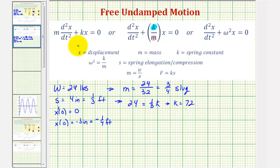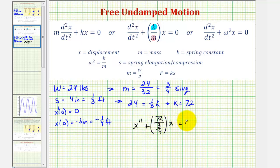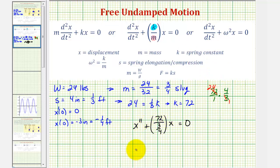Our differential equation is x double-prime plus k divided by m times x equals zero, which is 72 divided by three-fourths times x equals zero. 72 divided by three-fourths is equivalent to 72 times four-thirds, which simplifies to 96. So we want to solve the differential equation x double-prime plus 96x equals zero.